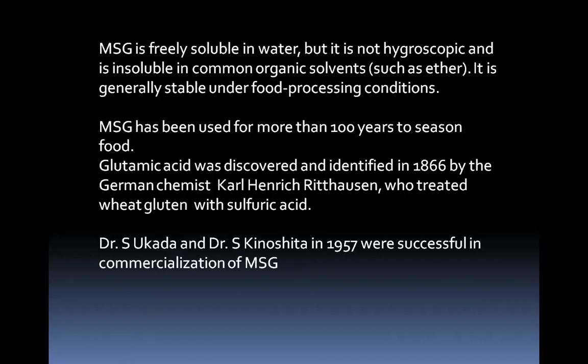Monosodium glutamate is freely soluble in water but not hygroscopic and is insoluble in common organic solvents such as ether. It is generally stable under food processing conditions and has been used for more than 100 years to season foods. Glutamic acid was discovered and identified in 1866 by German chemist Karl Heinrich Ritthausen, who treated wheat gluten with sulfuric acid. Dr. Ikeda and Dr. Kinoshita in 1957 were successful in the commercialization of monosodium glutamate.